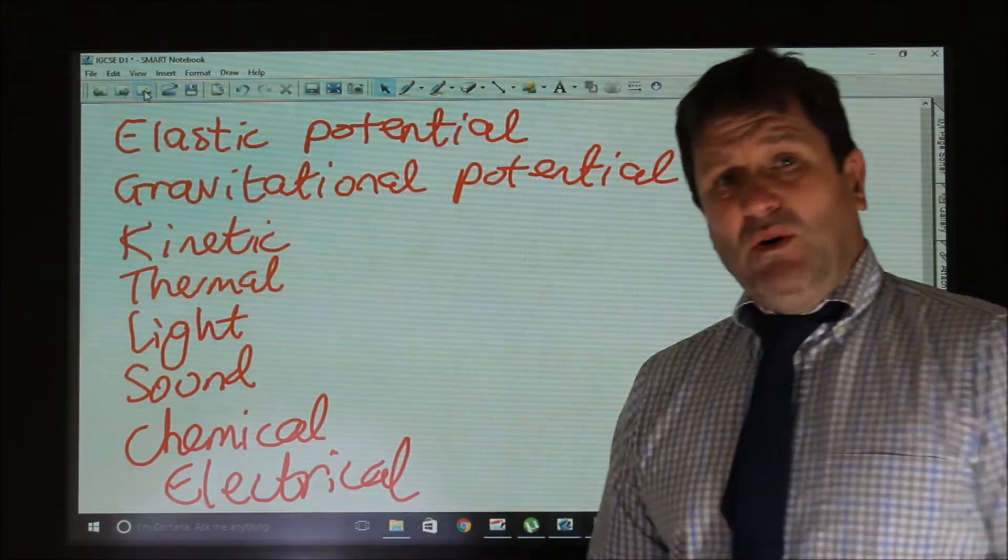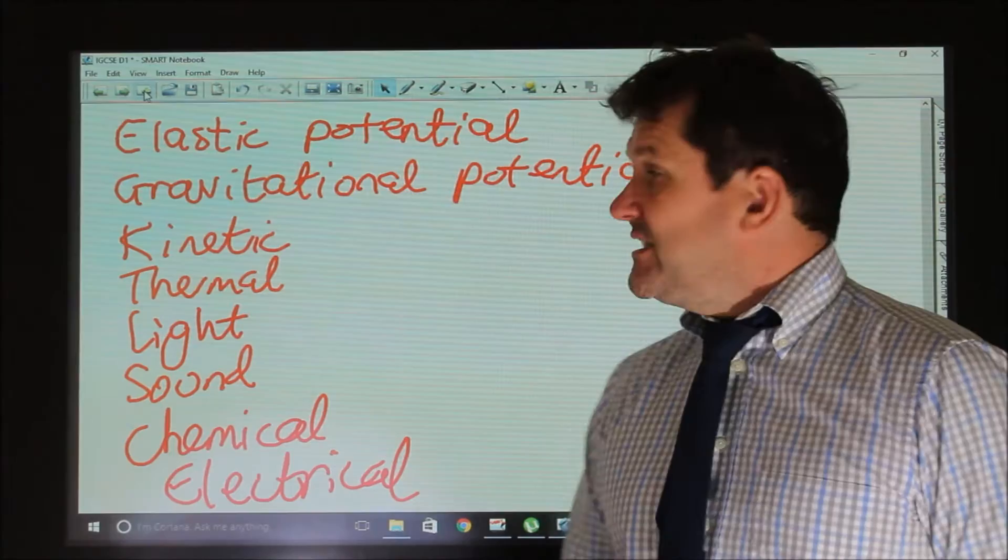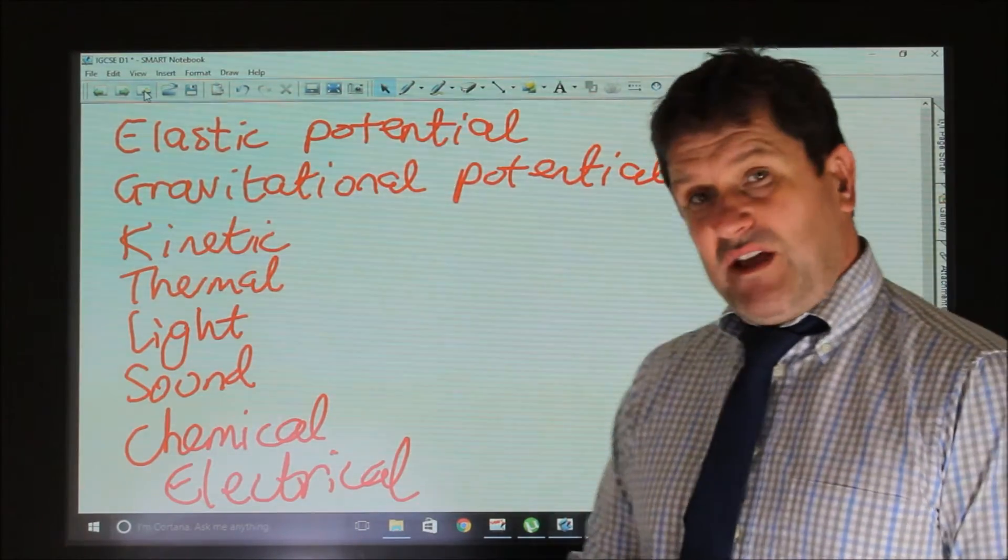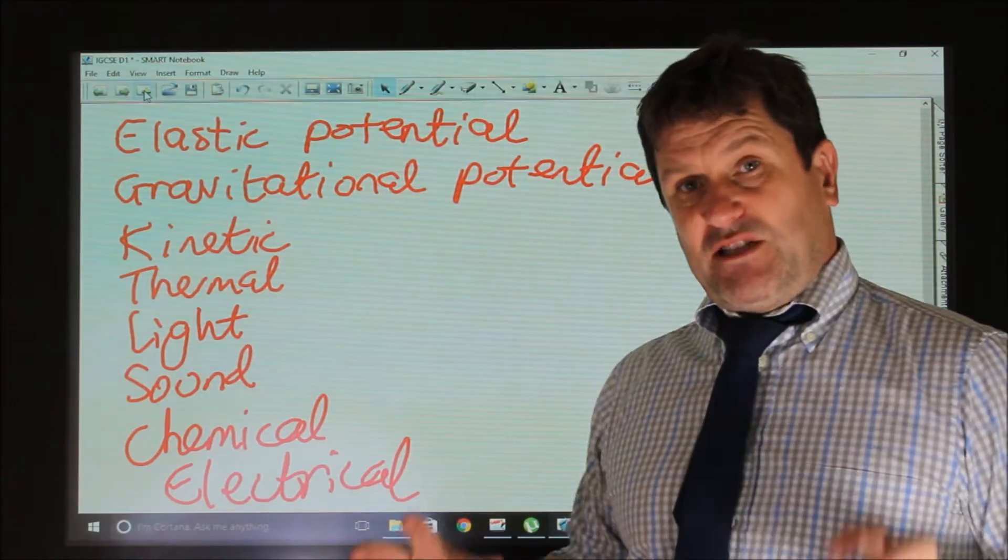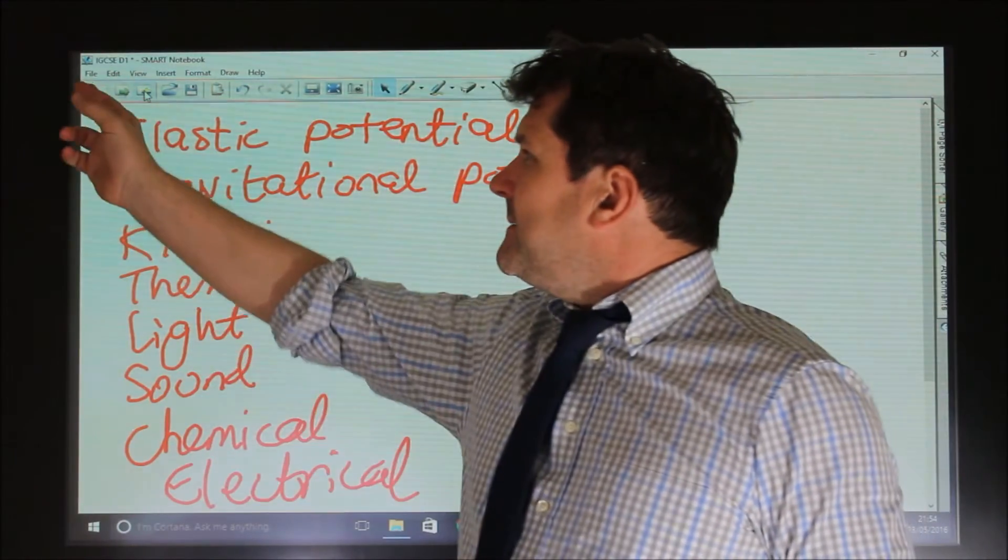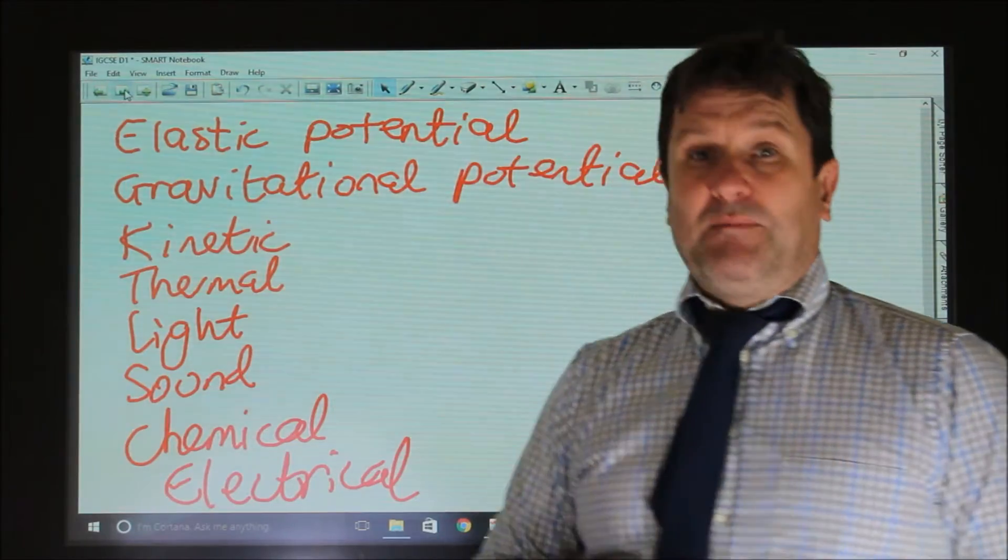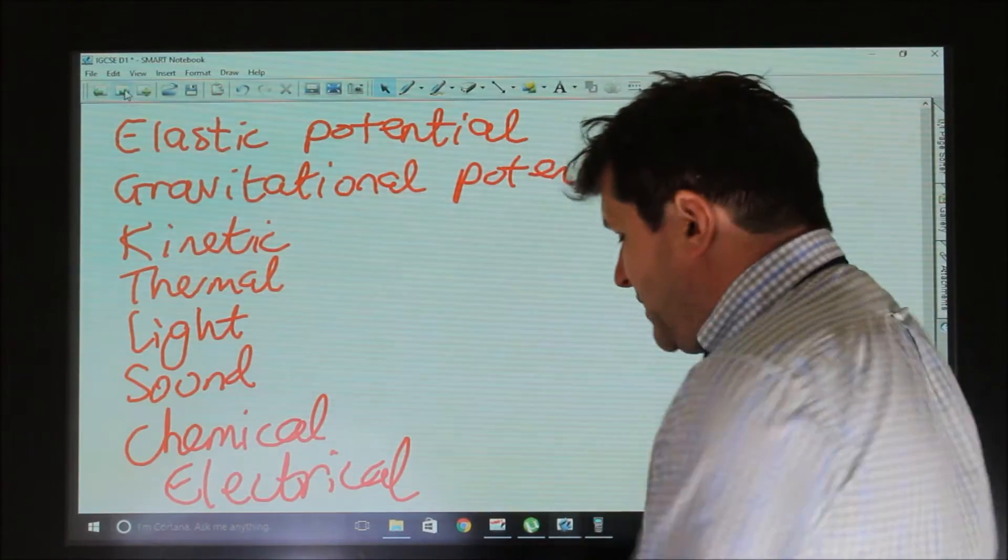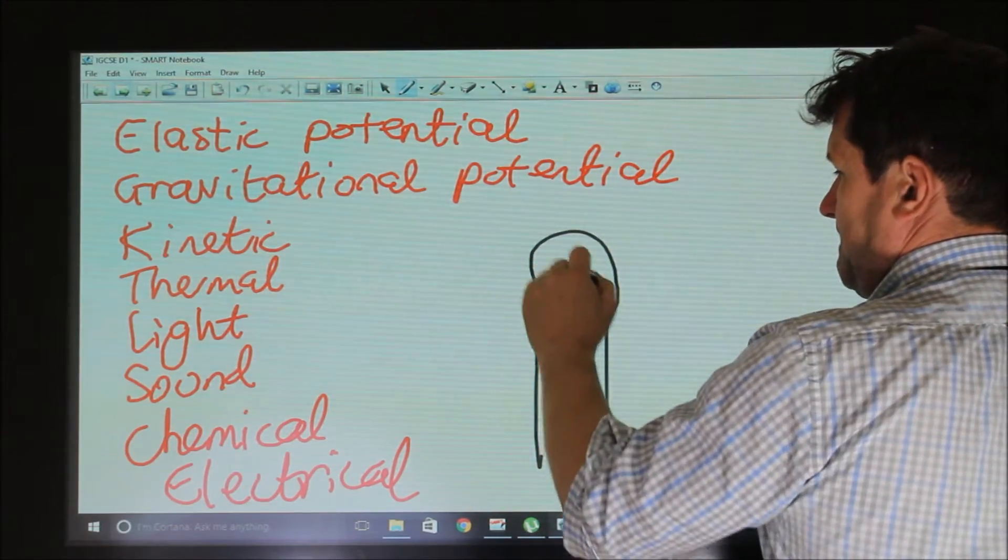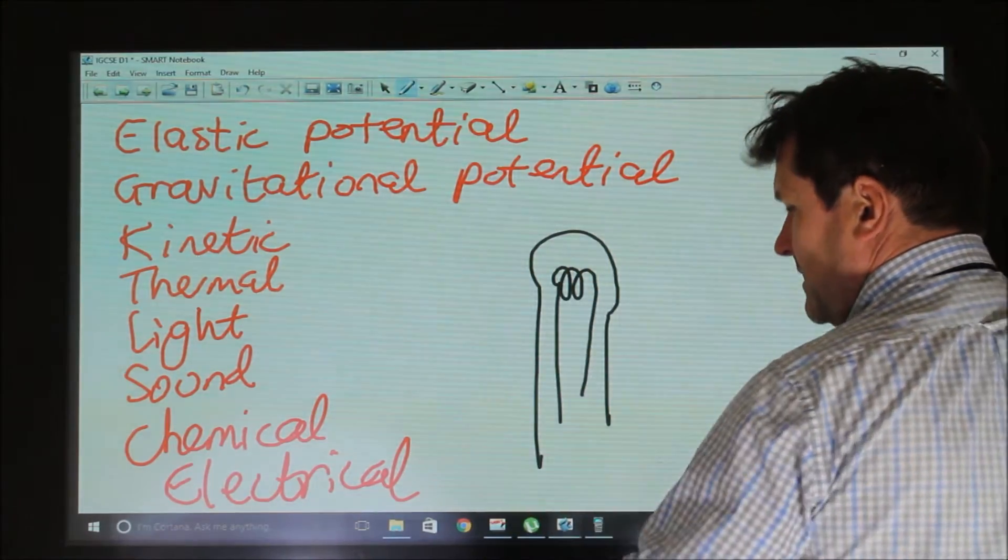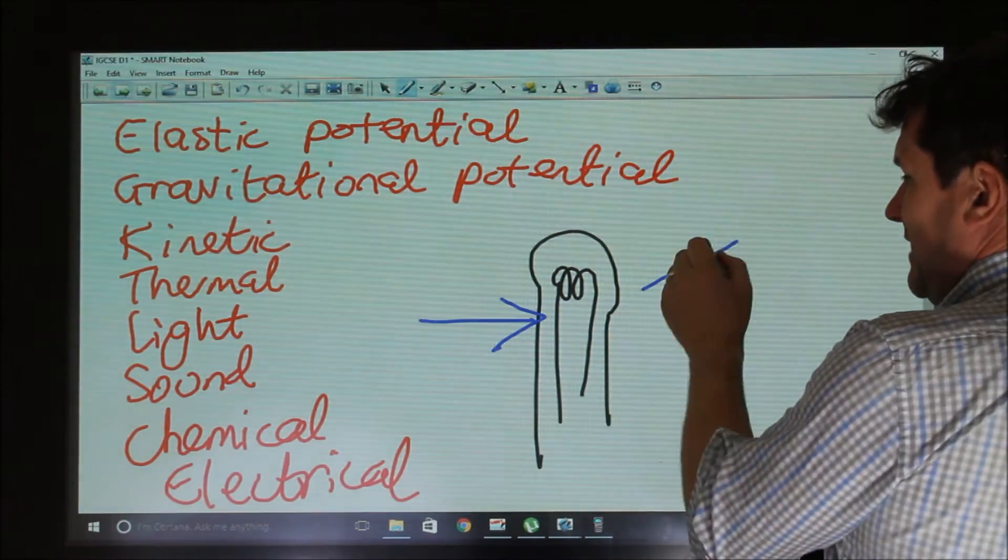Now, it's important to be able to think about every situation and every energy transfer incorporating one of these 8 types of energy transfers. So if we think about, for example, a light bulb. When a light bulb is turned on, a light bulb has energy going in and it has energy coming out.